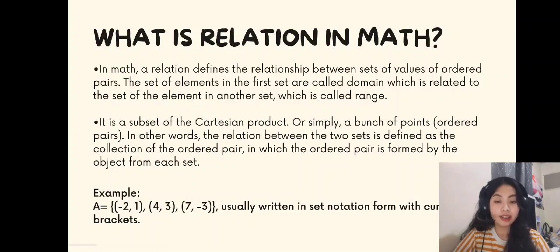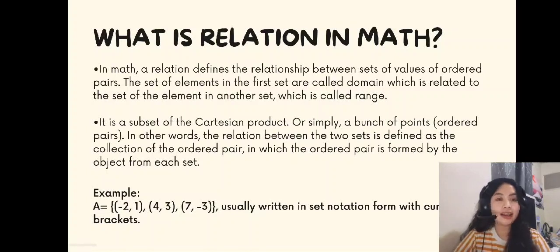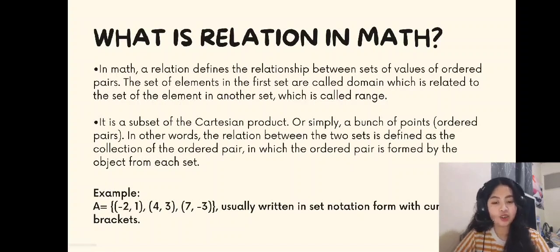In other words, the relation between the two sets is defined as the collection of ordered pairs, in which the ordered pair is formed by the object from each set. For example, set A is equal to {(-2, 1), (4, 3), 7, and -3}, usually written in set notation form with curly brackets.